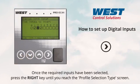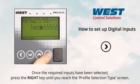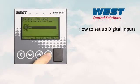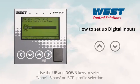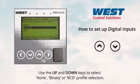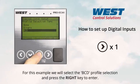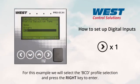Once the required inputs have been selected, press the right key until you reach the profile selection type screen. Use the up and down keys to select none, binary, or BCD profile selection.